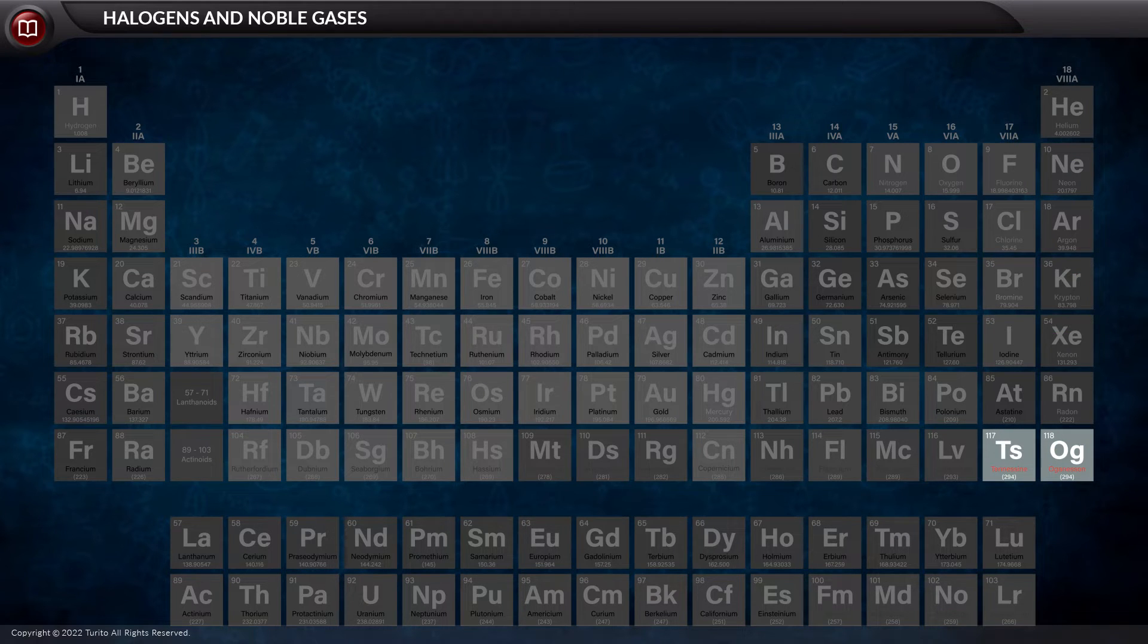The members which are present at the bottom of the group are synthetic elements. Ts is tennessine, and Og is the heaviest element known to date, oganesson.